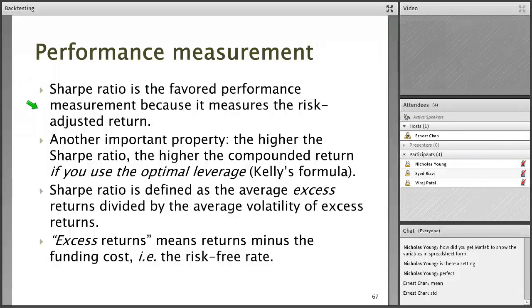The risk measured in the Sharpe Ratio is normal risk — it is not tail risk. People are very aware of the difference between normal volatility and abnormal volatility, which we call tail risk or black swan risk. Sharpe Ratio doesn't measure tail risk very well. We are only measuring the day-to-day normal fluctuation, not 2008-style risk.